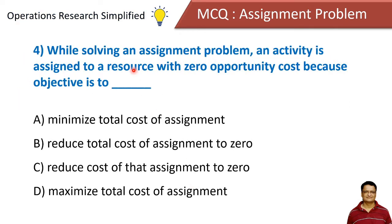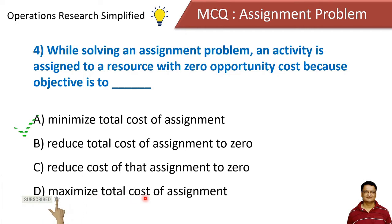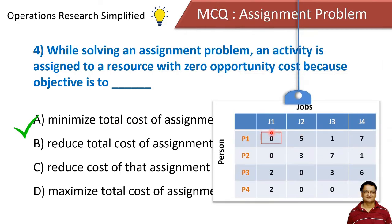While solving an assignment problem, an activity is assigned to a resource with zero opportunity cost because the objective is to: minimize the total cost of assignment, reduce the total cost of assignment to zero, reduce the cost of that assignment to zero, or maximize total cost of assignment. The correct answer is to minimize the total cost of assignment. We assign a particular job to a particular person where the opportunity cost is zero.